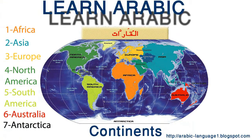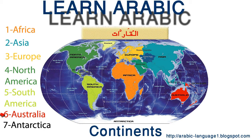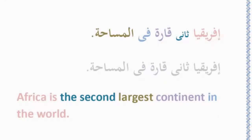This is a lesson on continents. As we all know, there are seven continents: Africa, Asia, Europe, North America, South America, Australia, and Antarctica. Let's see some examples — first sentence.